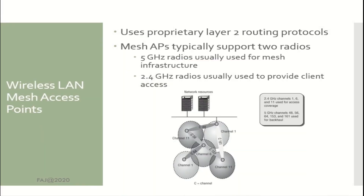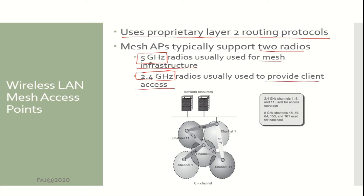Wireless LAN Mesh Access Points use proprietary Layer 2 routing protocols. Mesh APs typically support two radios — 2.4 GHz and 5 GHz. The 5 GHz radio is usually used for the mesh infrastructure backhaul, while the 2.4 GHz radio is typically used to provide client access.